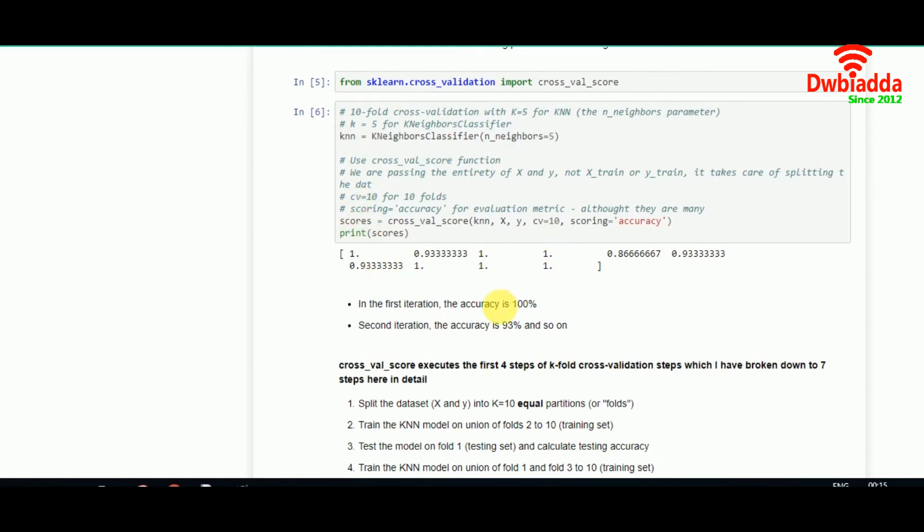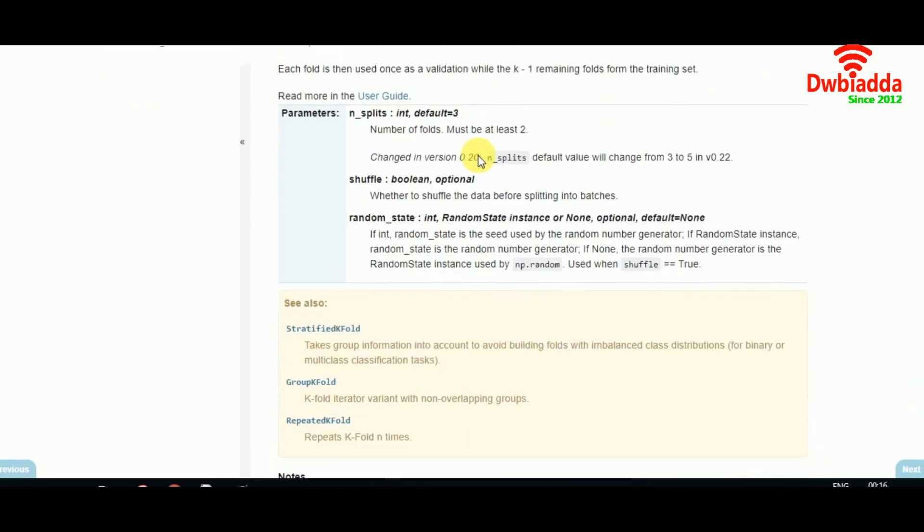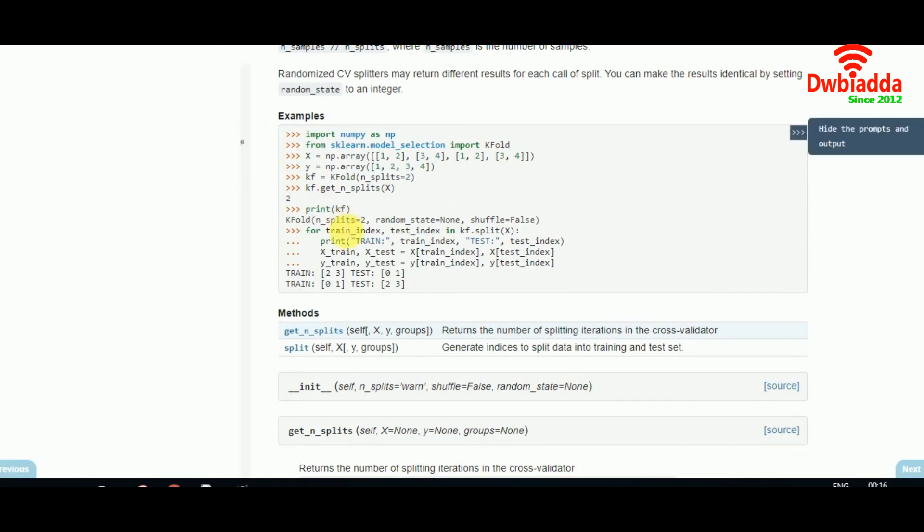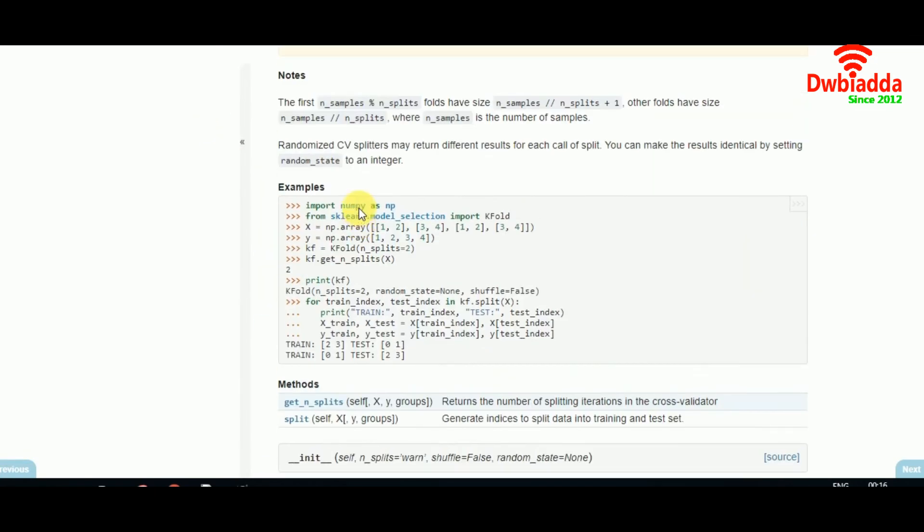In the first iteration we get accuracy of 100 percent, followed by 93 percent and so on. That was the concept of k-fold and the essentials of gradient descent. We can always look at the documentation in sklearn model selection and k-fold. The library is being updated now and you still get all the examples and testing and training data sets.